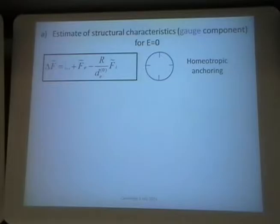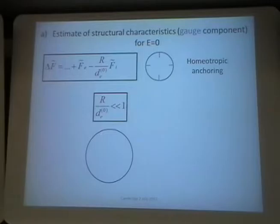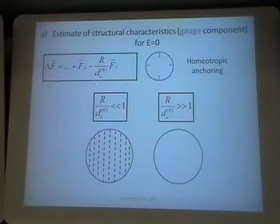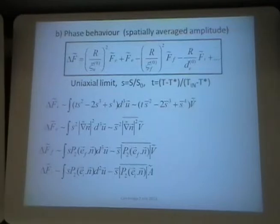Let us first estimate the gauge component — the director field inside. If the field is zero, the condensation term does not contain the gauge component, so you are left with the elastic term and the surface term. Suppose you have a cavity which enforces homeotropic anchoring. If the surface anchoring value is small, changes there don't matter, so you have to listen to the elastic term — the elastic term is crucial. In this case you will have an essentially uniform structure. On the other hand, if the surface anchoring is large, then you should obey the surface condition, not the elastic guide.